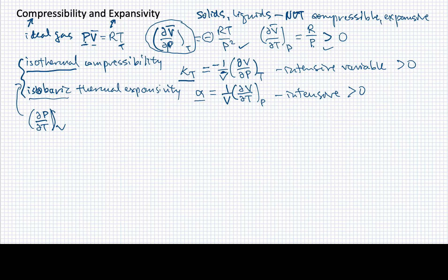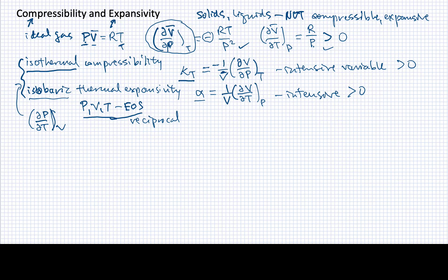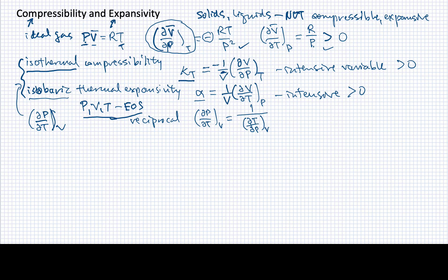In order to do this, I need to understand a couple of properties of partial derivatives. The first is the reciprocal property. When three variables — volume, pressure, and temperature — are all related by an equation of state, I can take partial derivatives of one with respect to another holding the third constant. The reciprocal property tells me that the partial derivative of P with respect to T at constant volume equals one over the partial derivative of T with respect to P at constant volume. I've simply flipped the numerator and denominator — these are equivalent expressions.